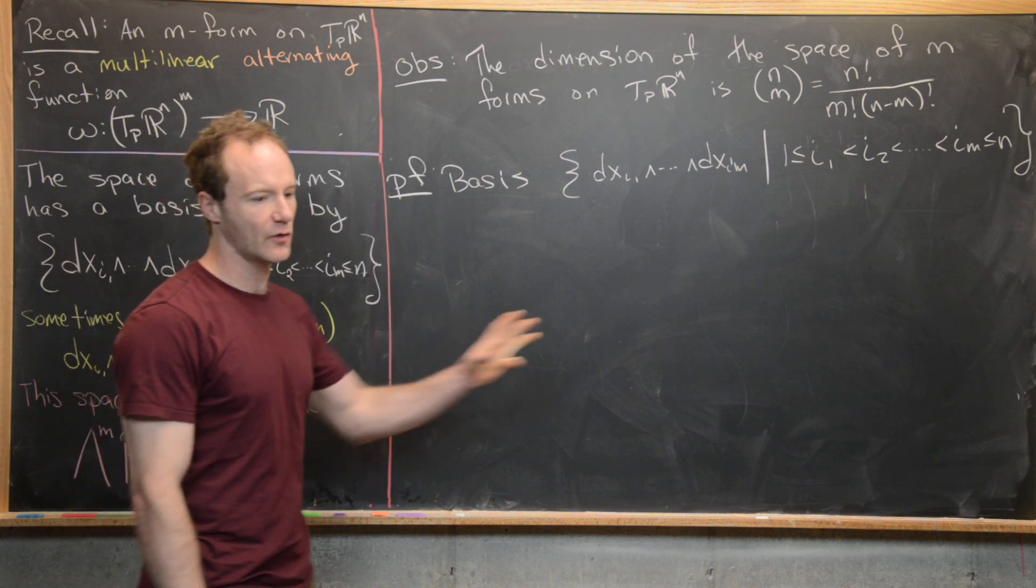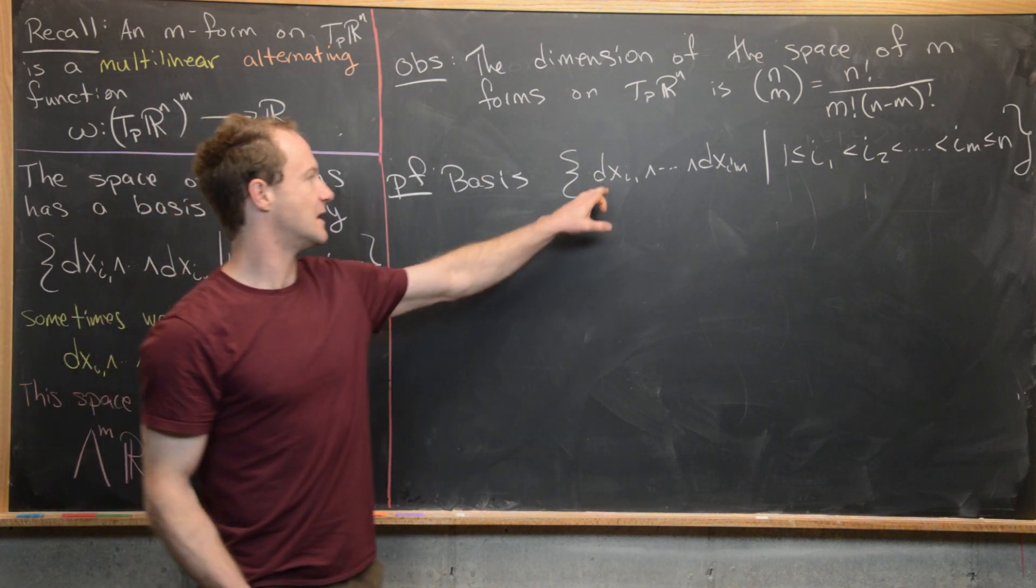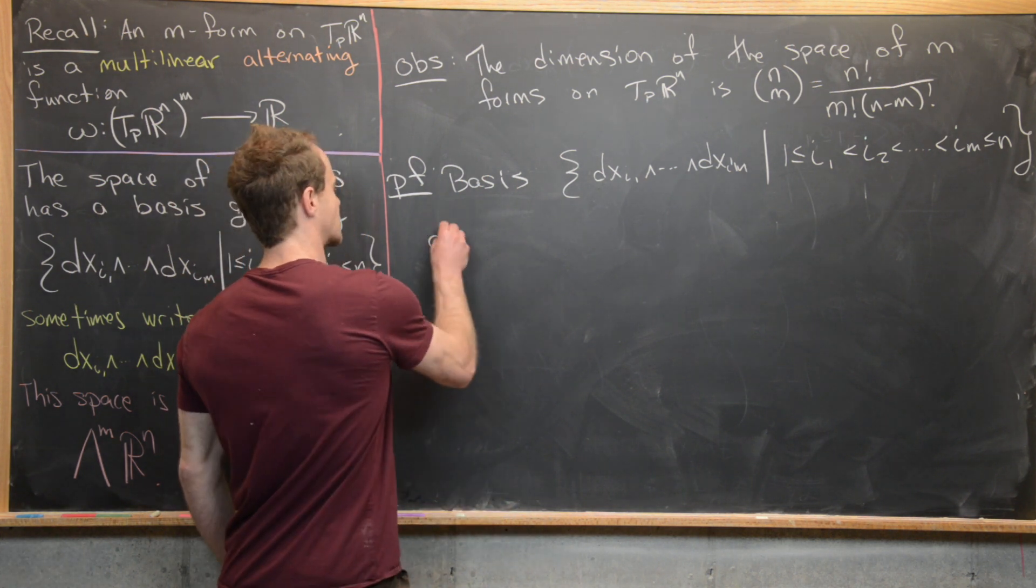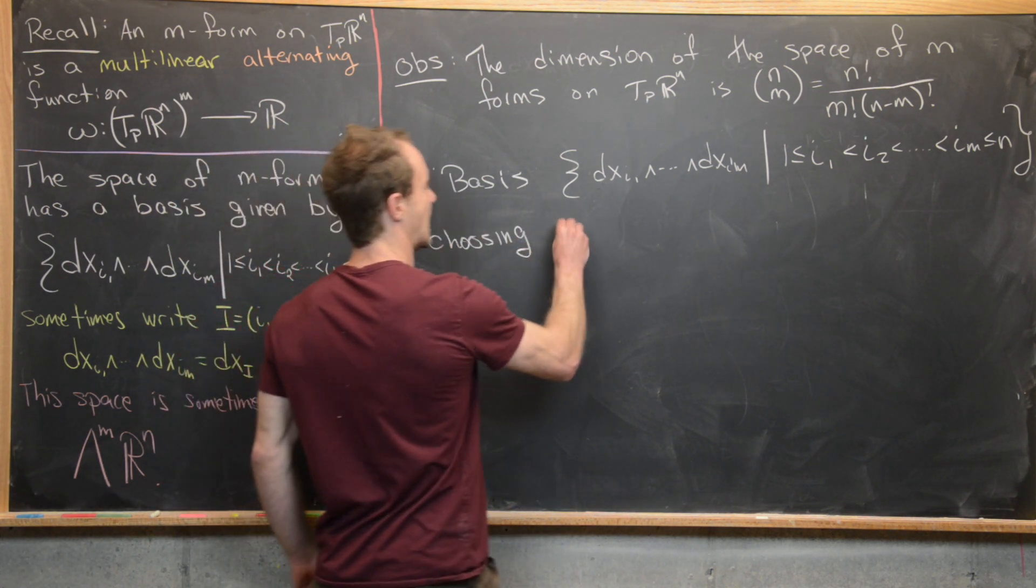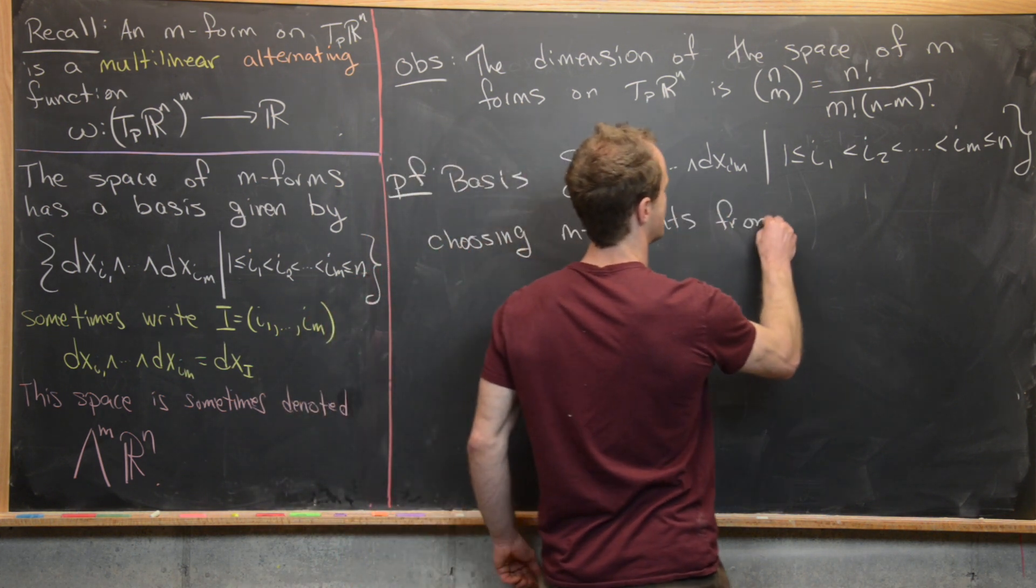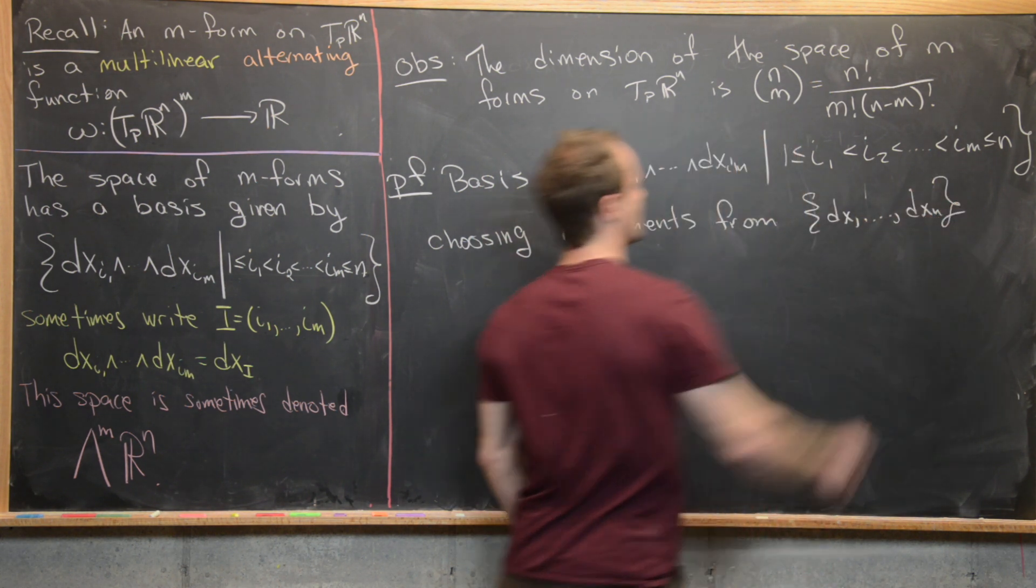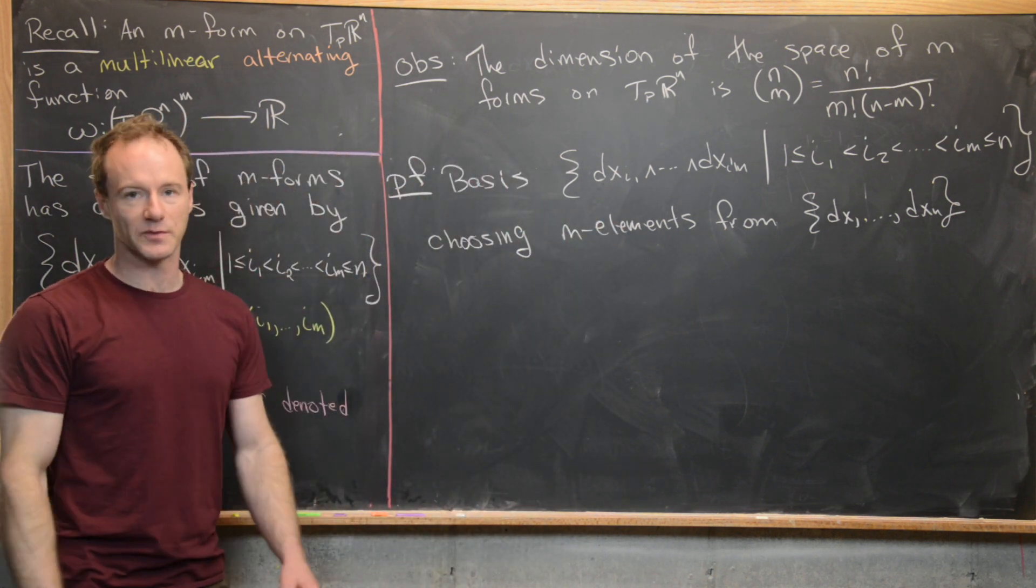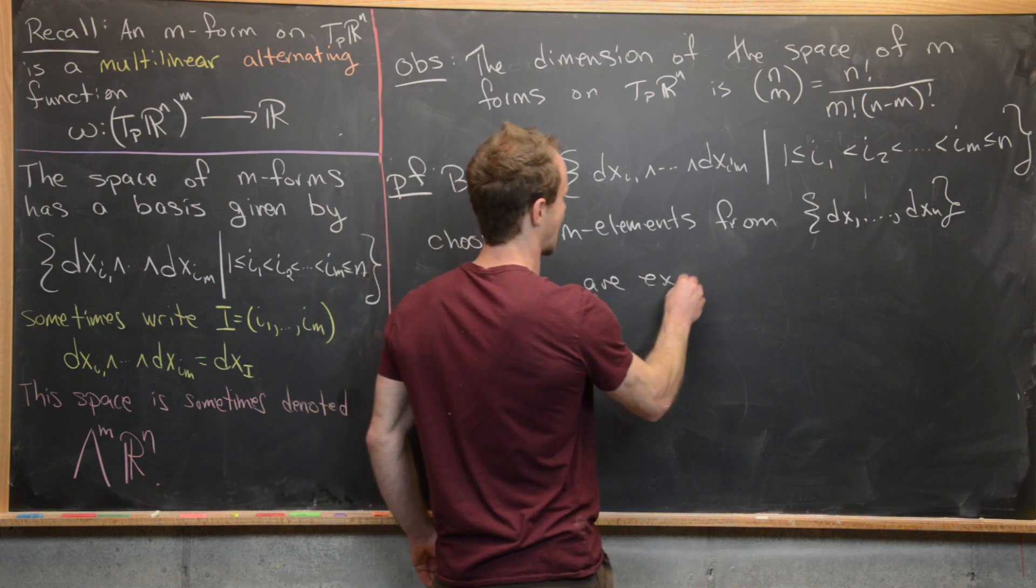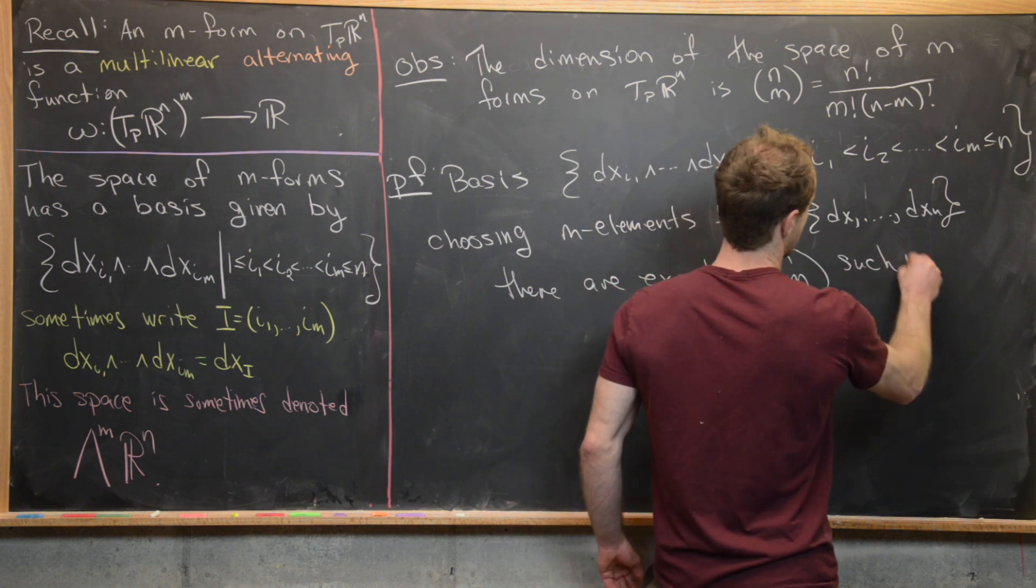So essentially what we're trying to do is take the 1 forms, DX1, DX2, all the way up to DXN, pick M different 1 forms, and then put them together into an elementary M form. So in other words, we're choosing M elements from the set DX1 all the way up to DXN. But that's exactly how binomial coefficients are defined. And so there are exactly N choose M such ways to do this.